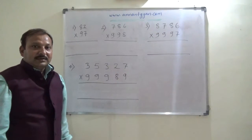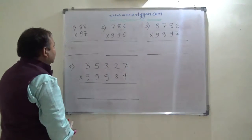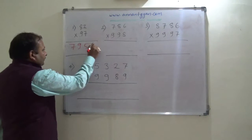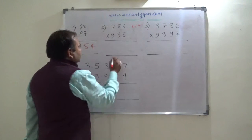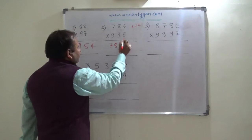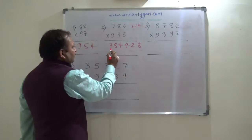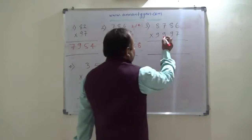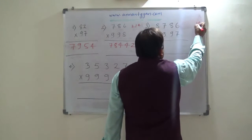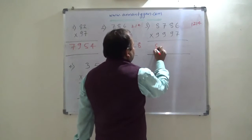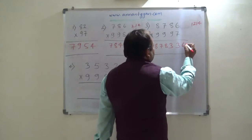I shall show you how I am getting these answers quickly. The first number is 82 into 97, and the answer of 82 into 97 is 7954. The second question is 786 into 998, which is equal to 784428. The third one is 8786 into 9997, so the answer is 87833364.